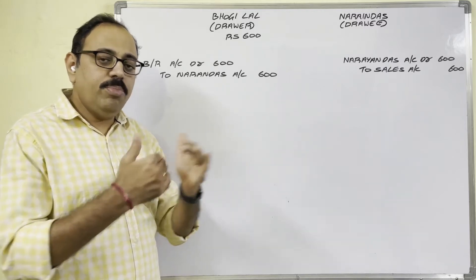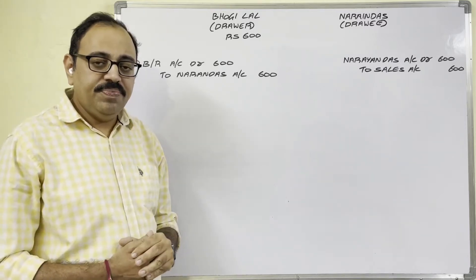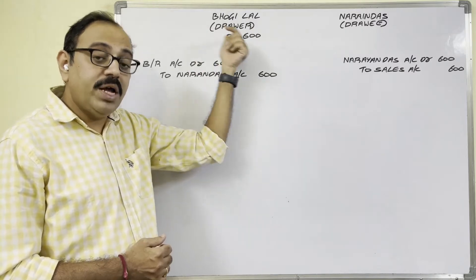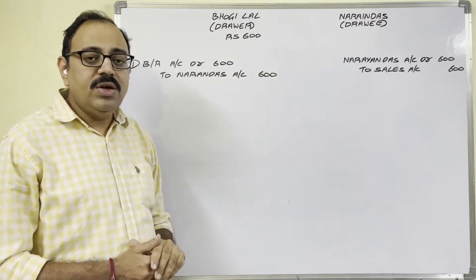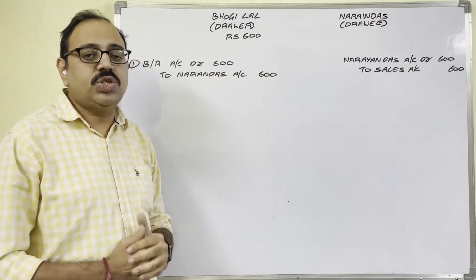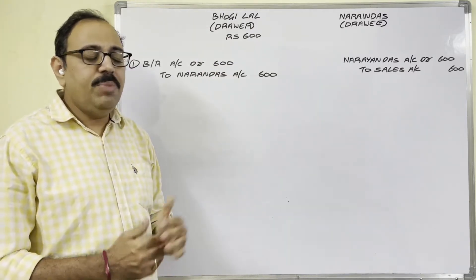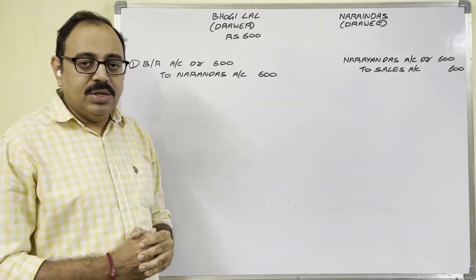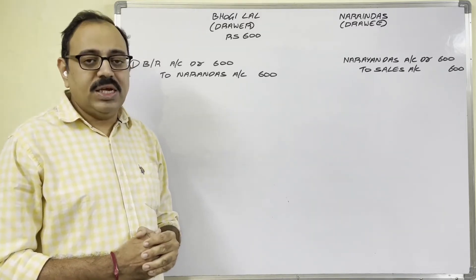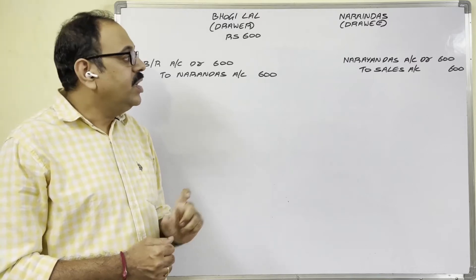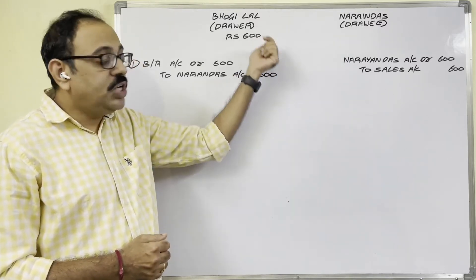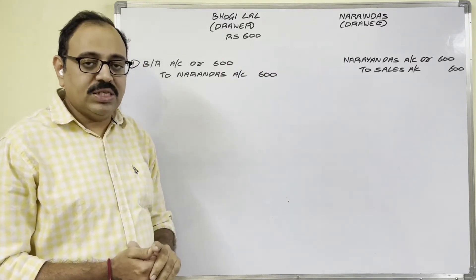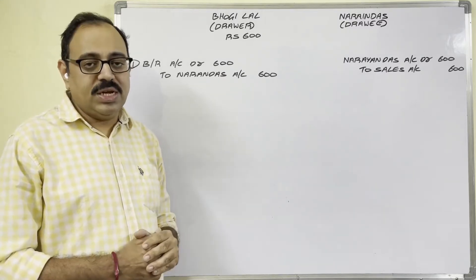In the second question four cases are given: when the bill is retained with the drawer, when the bill is discounted by the drawer, when the bill is endorsed by the drawer, and when the bill is sent to the bank for collection. So in all these cases, on the due date if the bill is dishonored, how to record the journal entries — that is what we are going to see here.